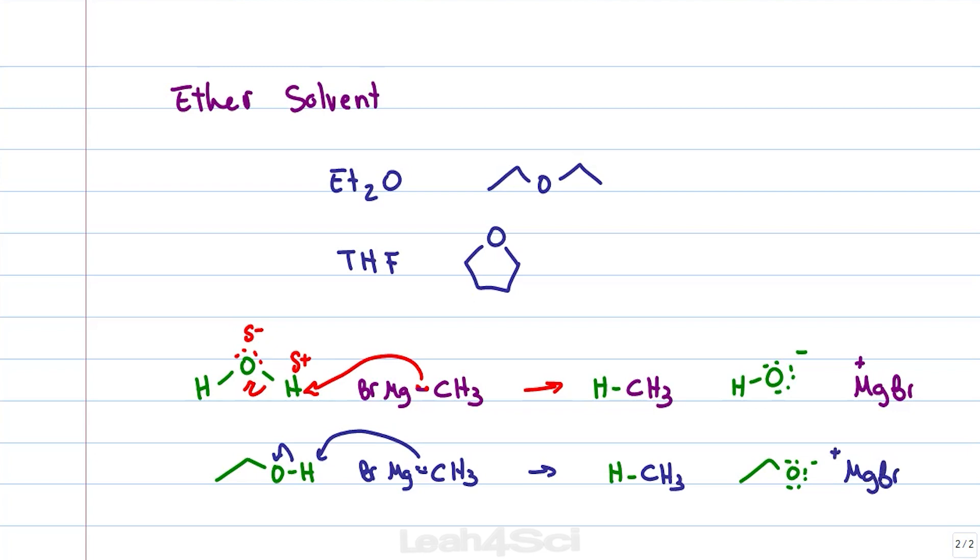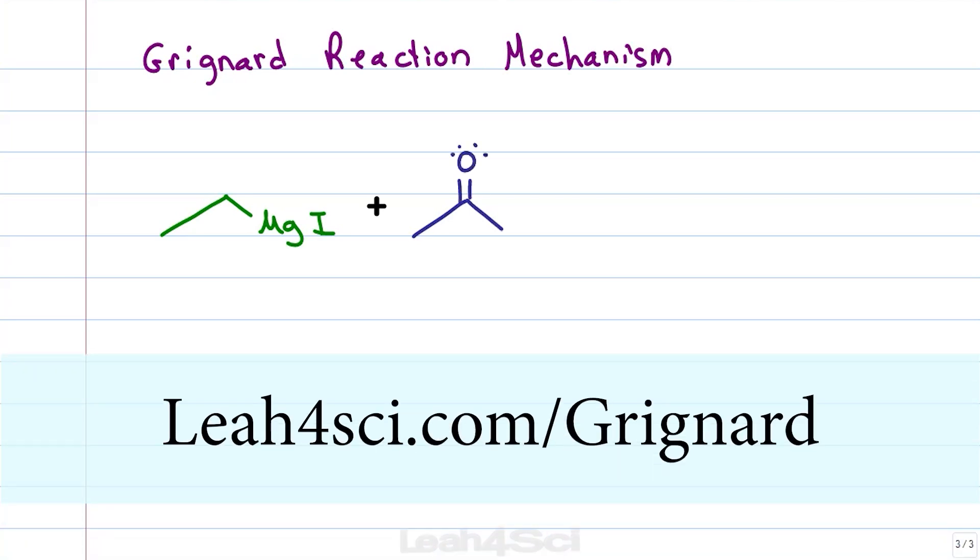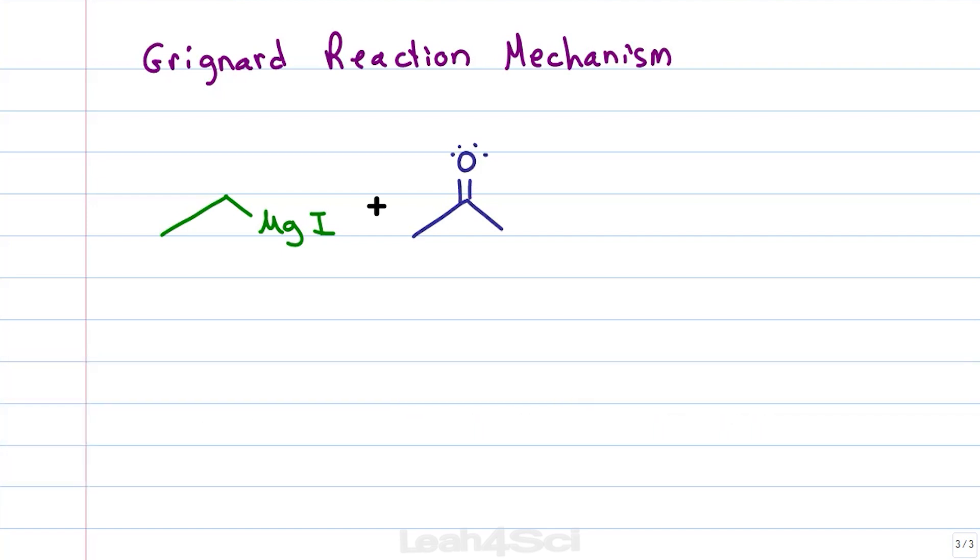Now that we know what not to do, let's take a look at the Grignard reaction mechanism starting with an ethyl Grignard reacting with acetone. Since Grignards can attack many compounds, I created a mini cheat sheet that you can find on my website leah4sci.com/Grignard. The most common is the carbonyl that gives you an alcohol and the mechanism looks something like this.